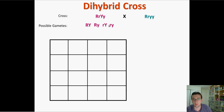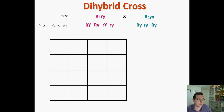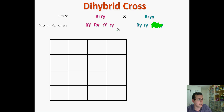Those four possible gametes come from distributing genes by independent assortment. Now, for the second organism: he can make big R with little y, or little r with little y — and the repeated versions are the same gamete. So you can only make two types of gametes from this organism and four kinds from the first.